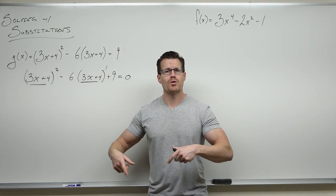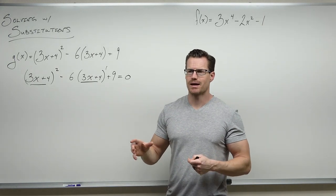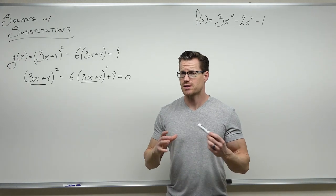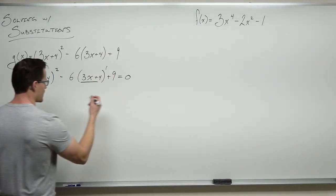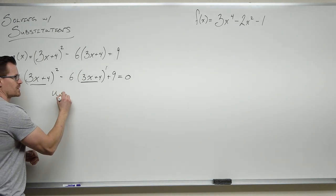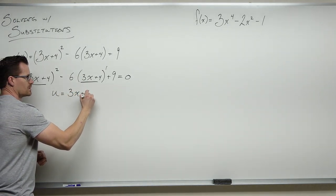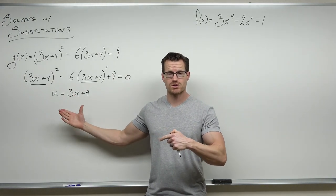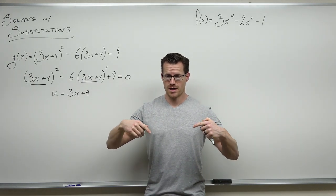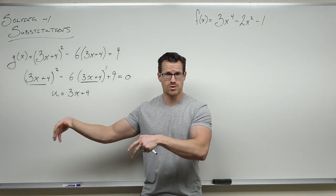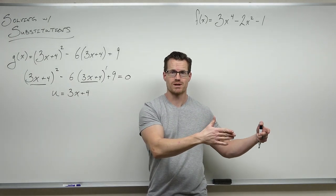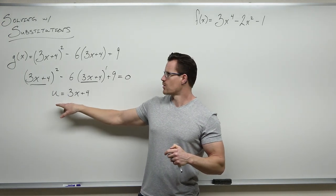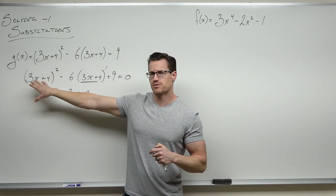We're going to make it into a quadratic that's easy to deal with using stuff we already know, solve it, and then go back in terms of x. This is kind of like breadcrumbs — like Hansel and Gretel. You go into the forest, leave a trail of breadcrumbs, do some cool stuff, and follow the trail back out. We're going to use u to get away from (3x+4), and that substitution is our trail of breadcrumbs.